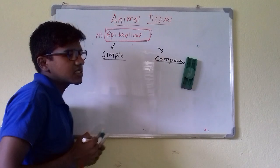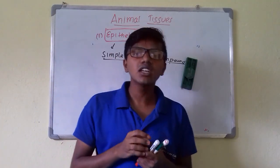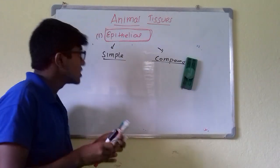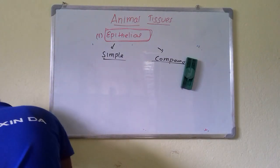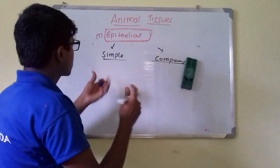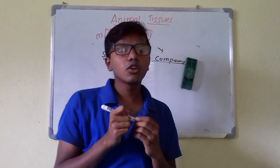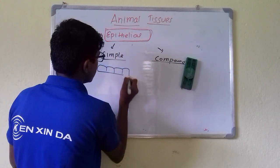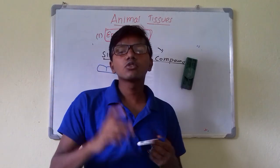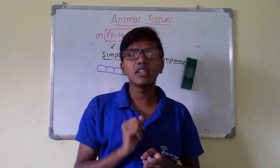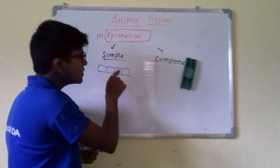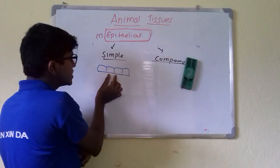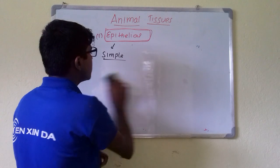Simple epithelium has only a single layer of cells, so all cells lie on the basement membrane. Compound epithelium has multiple layers. Since simple epithelium is a thin single layer, it is present in areas with less wear and tear — because if present in areas of high friction, the basement membrane may rupture.